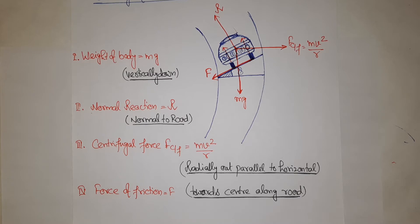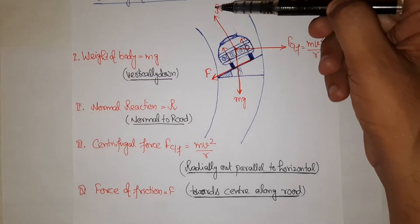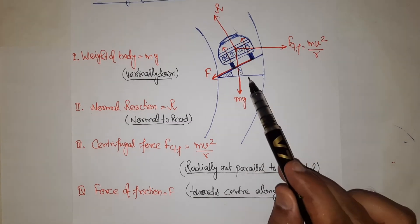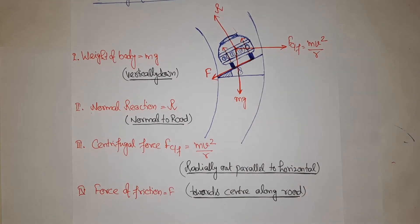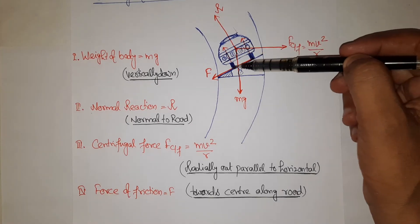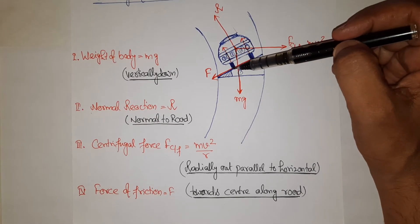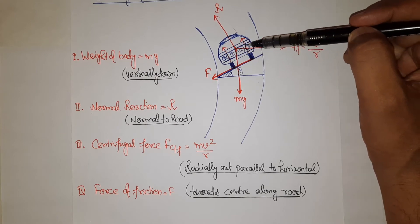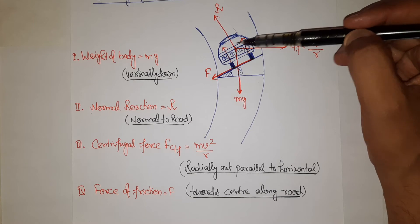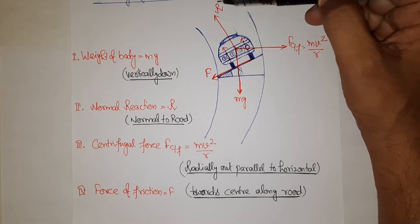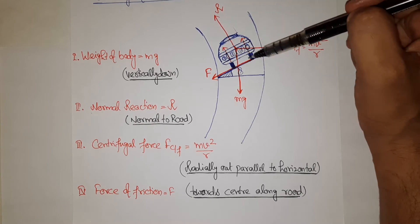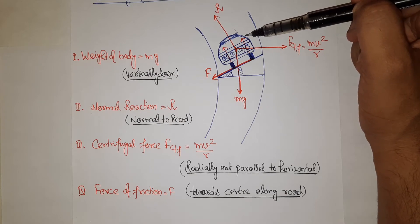Now for clarity I have minimized the diagram sizes so all forces are visible in a single frame. Forces acting: the body moves on the banked road at angle theta. mg acts vertically downward. Normal reaction R is the total contact force — R1 from one tyre and R2 from the other, combined as R acting normal to the road at the center of mass.